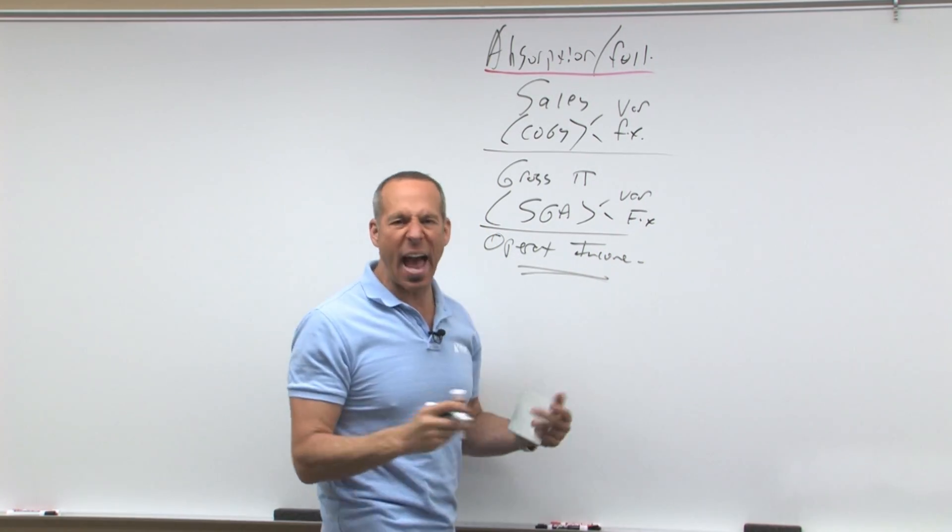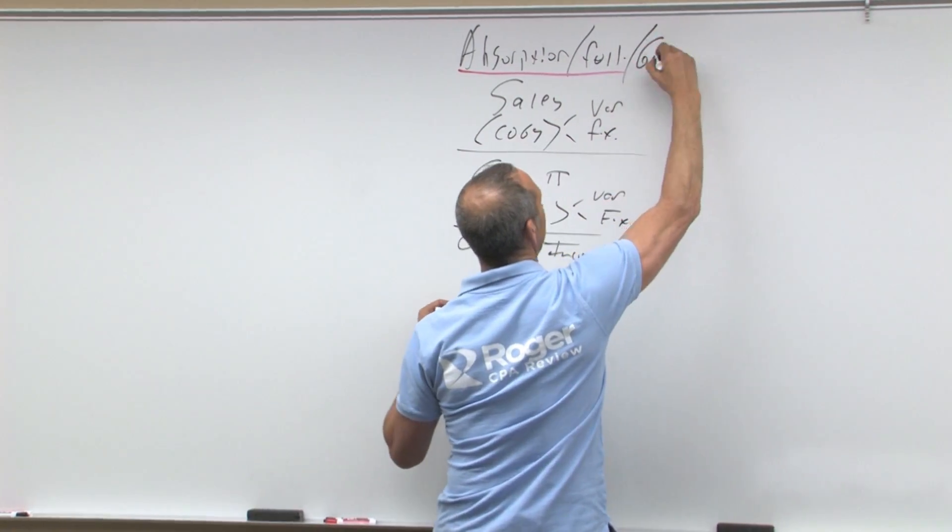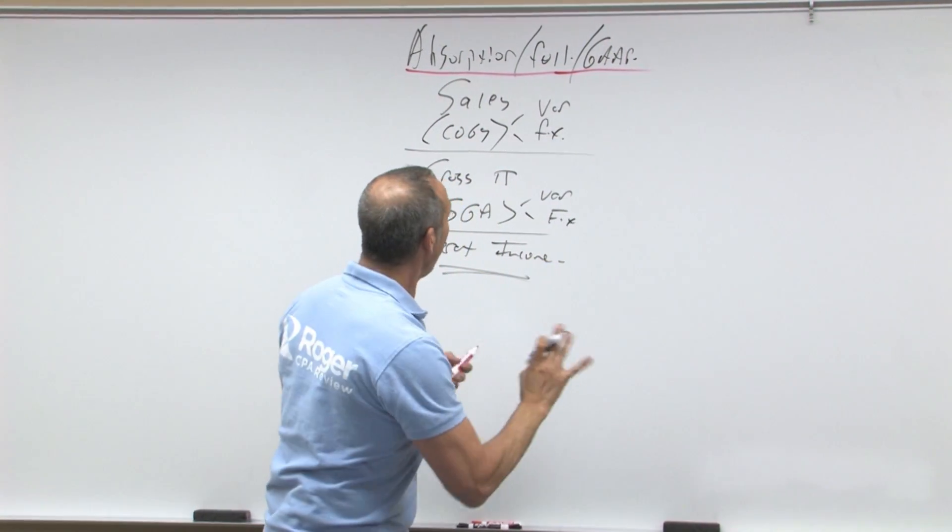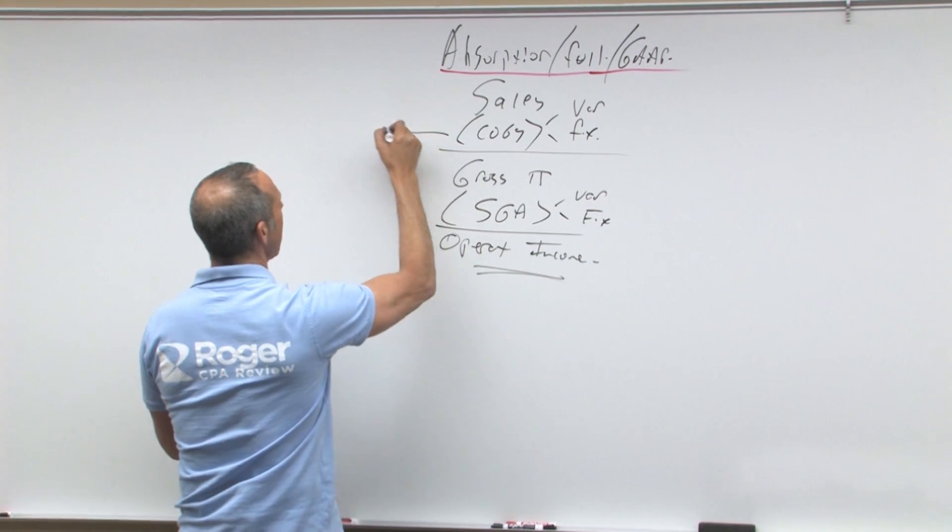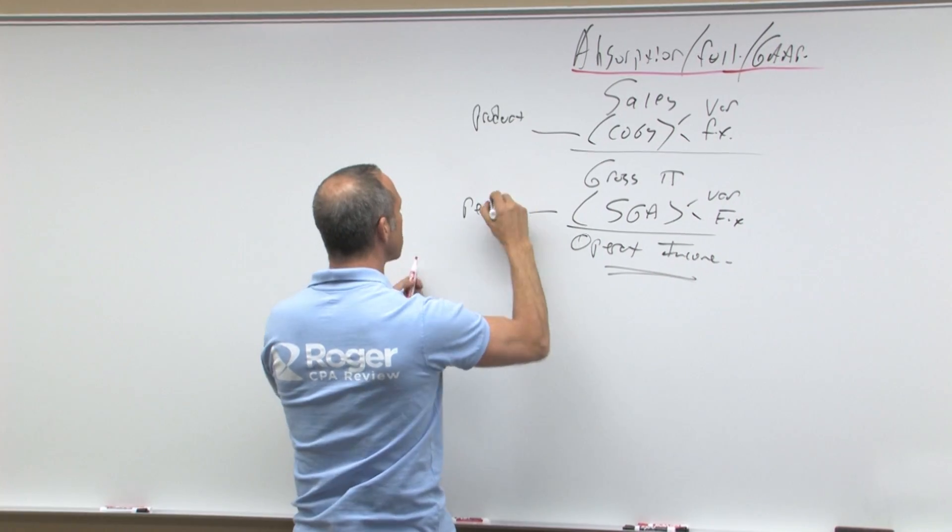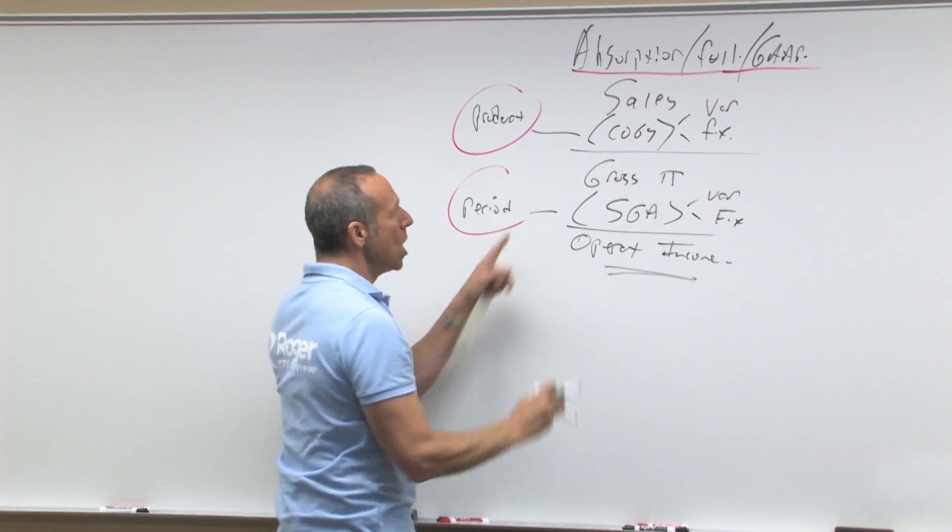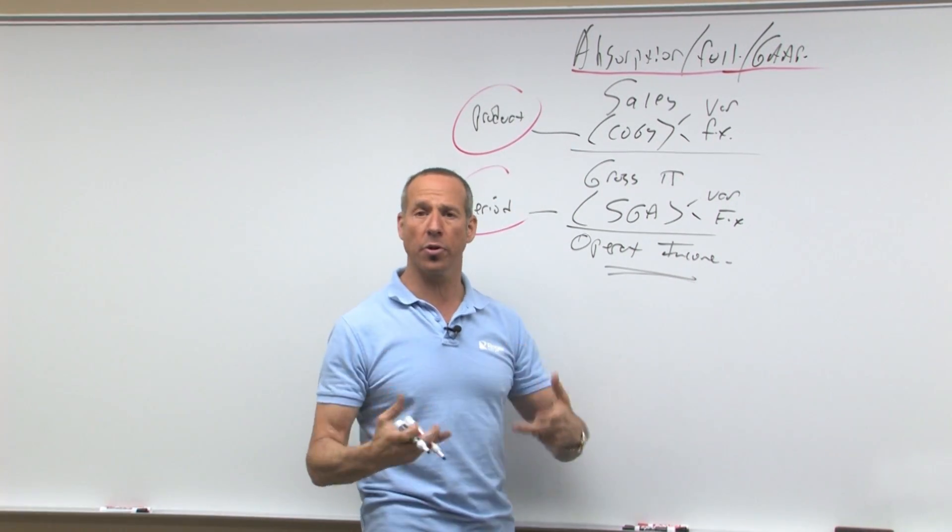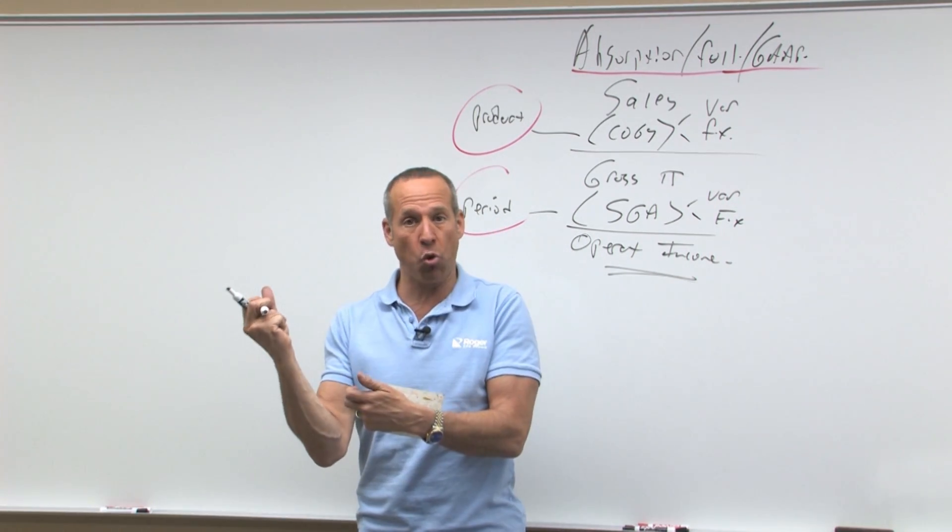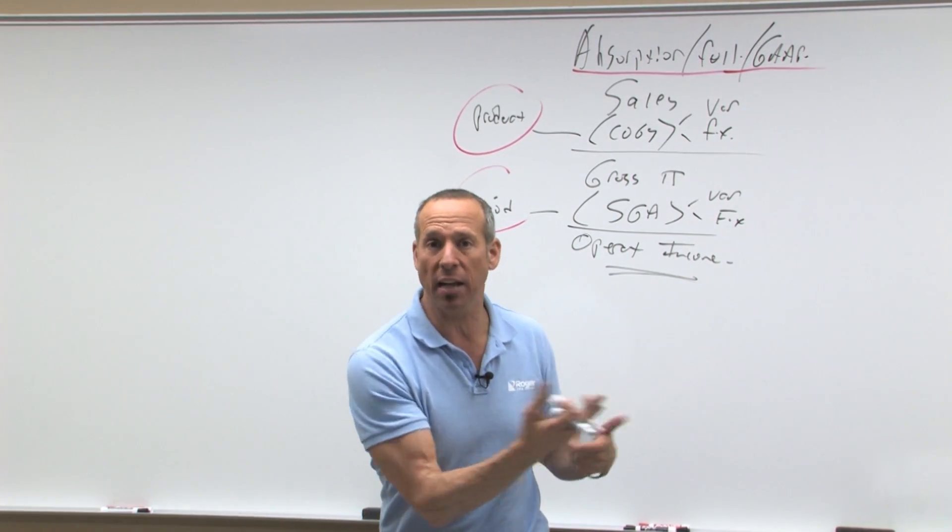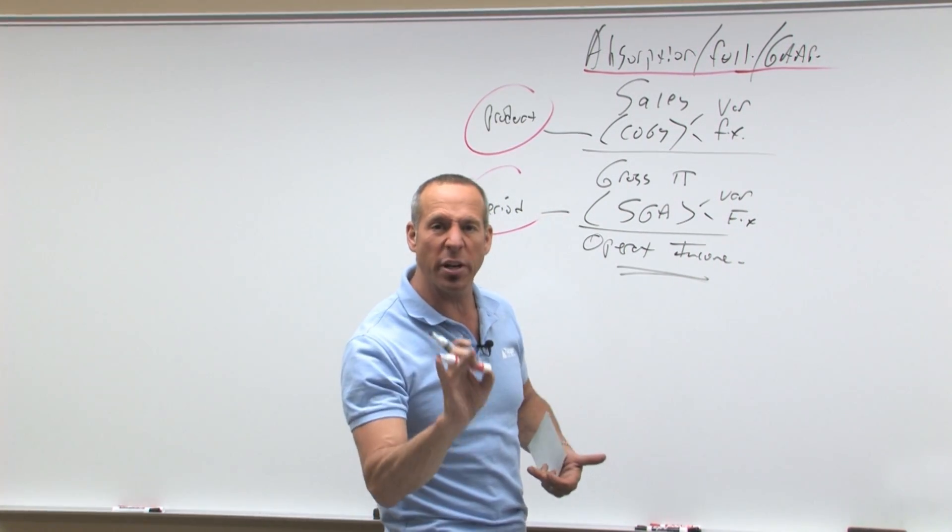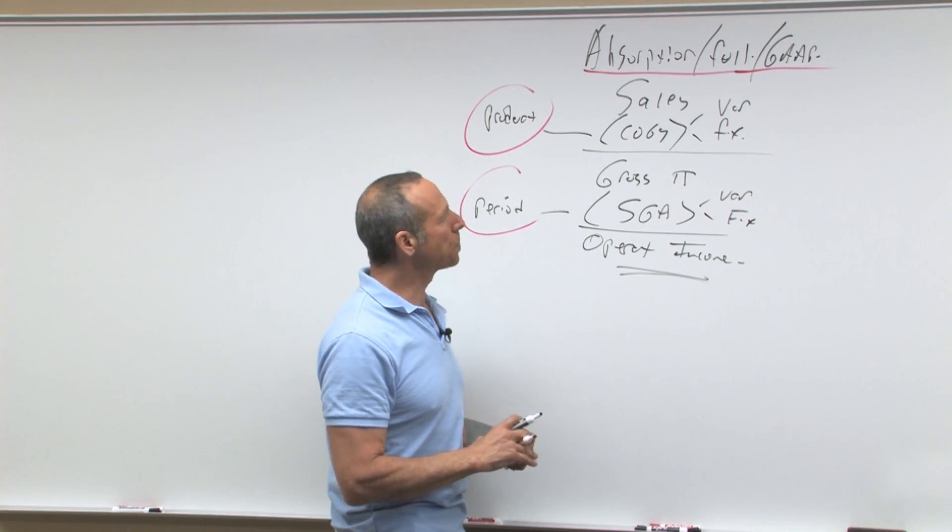Notice this is your regular GAAP income statement. This is what we use for external reporting purposes. What are we doing here? We're separating out our product costs from our period costs. Because remember when we defined it, we said a product cost is the cost of creating the product. That gets capitalized or absorbed into ending inventory and then expensed as you sell it. So it's a product cost. SG&A is a period cost. It's an expense in the period in which it occurs.